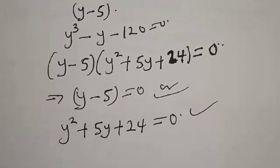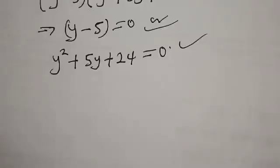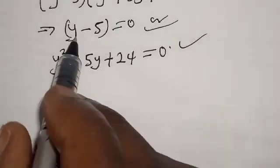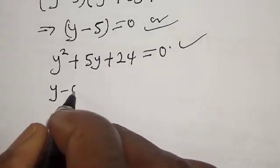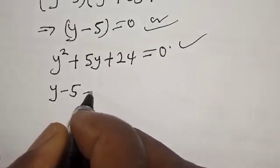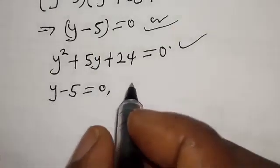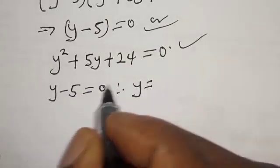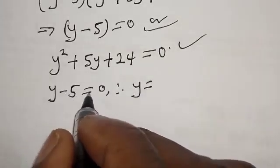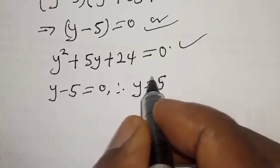From the first case, we have y minus 5 equal to 0. Therefore y will be equal to 5.